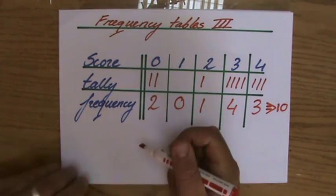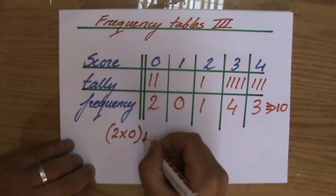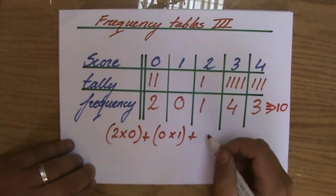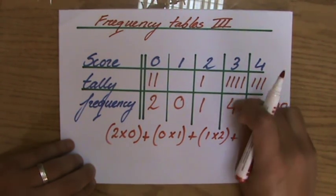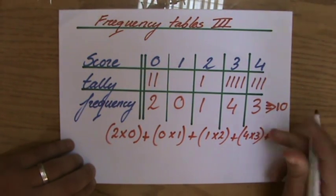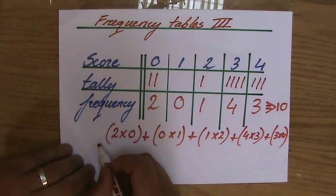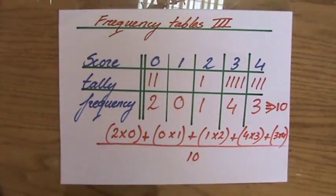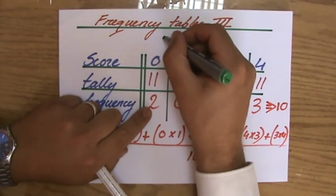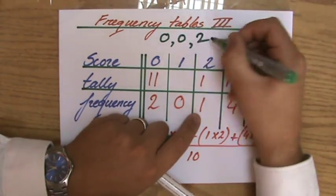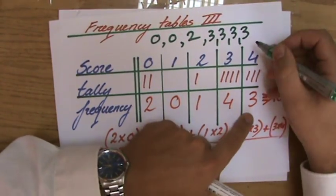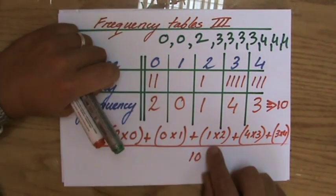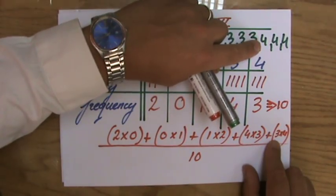To calculate the mean from the frequency table: two people have zero, so I do two times zero; nobody got a one, so zero times one; one person has two, so one times two; four people got three, so four times three; and three people got four, so three times four. Divided by 10 — because the frequency table represents: zero, zero, two, three, three, three, three, four, four, four — ten values in total.